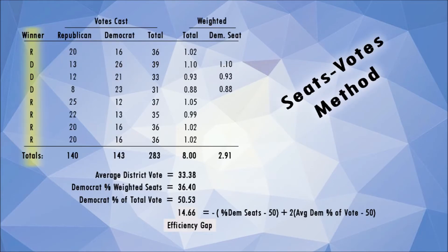Here is a state of eight districts where three Democrats and five Republicans have been elected. We show the Republican, Democrat, and total votes in each district. From these we weight each district by its total votes. We need these numbers to weight the seats and to get a total weighted seat count, which is used in the seats-votes equation. Let's run through it one step at a time.